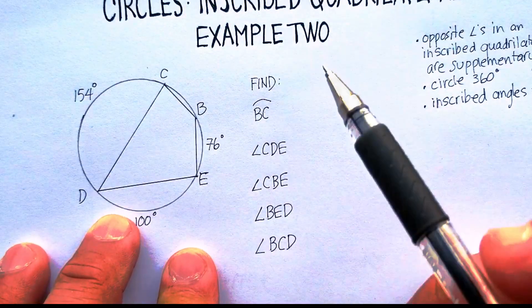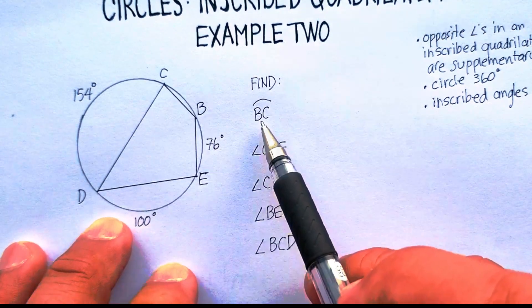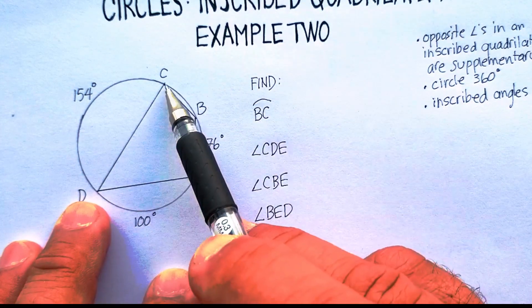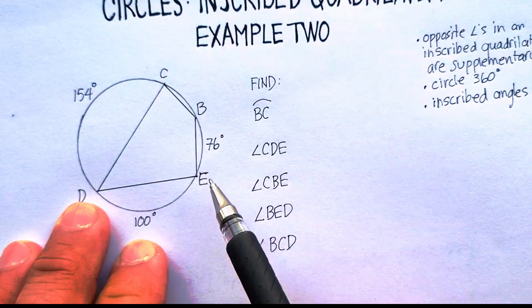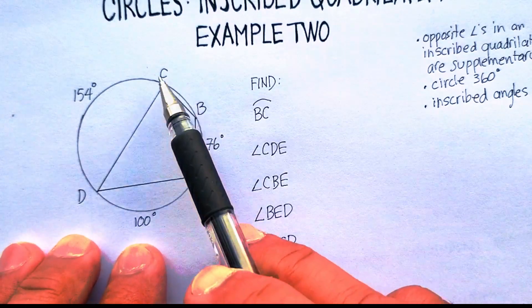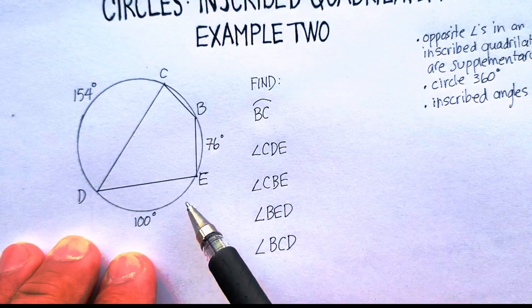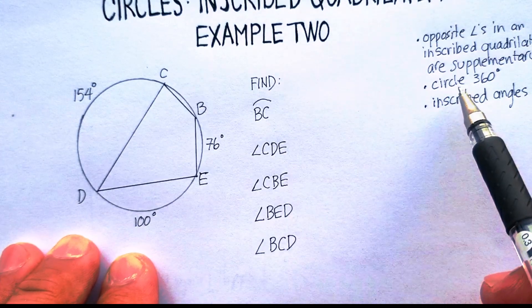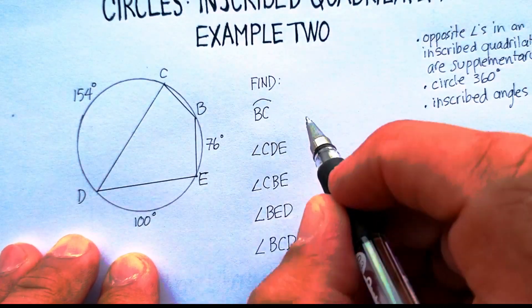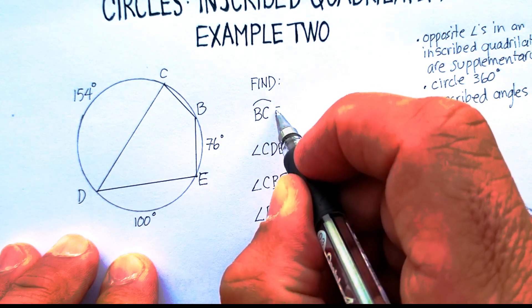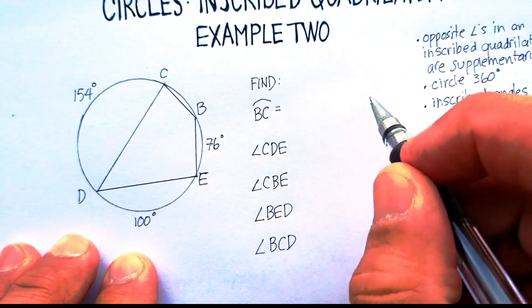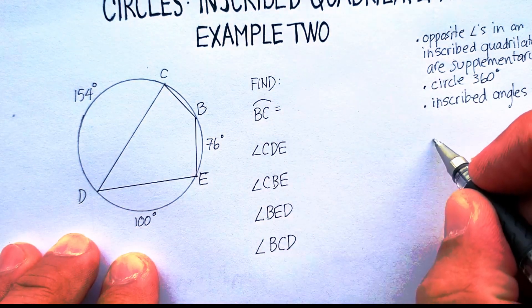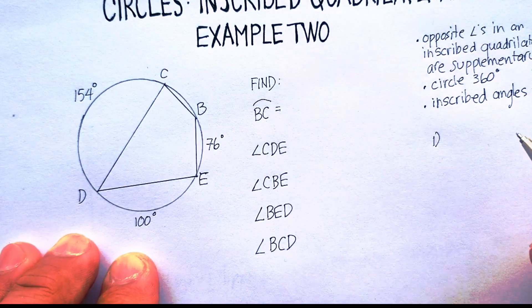So let's just go ahead and see what we can find. The first thing we're asked to find is BC, arc B to C. And I noticed that that's the only part of the whole circumference that is missing. So I'm going to use this piece of information to solve for that. Let's just go over here and do some of the work.